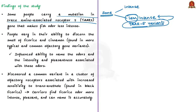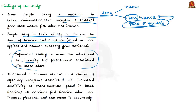In people where a variation in the TAAR-phi gene is present, it causes less intensity in the smell of fish — making the smell of fish less intense when sensed. The study also shows that people vary in their ability to discern the smells of licorice and cinnamon. These two discoveries were found in more typical and common olfactory gene variants, which influenced an individual's ability to name licorice and cinnamon odors as well as the intensity and pleasantness associated with those odors.